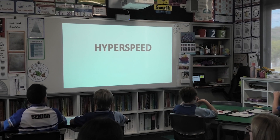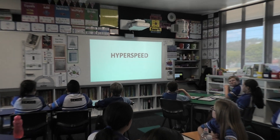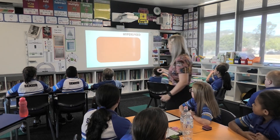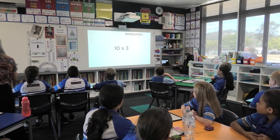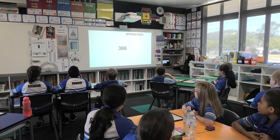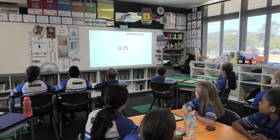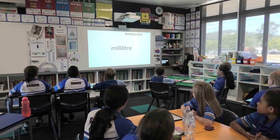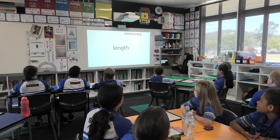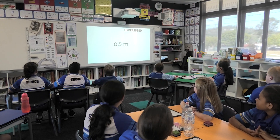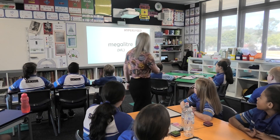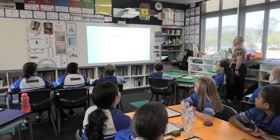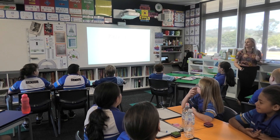Deep breath. Ready for our hyper speed. Ready? 3, 2, 1. Let's go. Yellow, blue, green, red, black, pink, purple, grey, orange, round, yellow, white, red, purple grey. 9, 2, 6, 50, 30, 8, 12, 8, 24, 388, 1099, 4, 10, 6, 7, 5, 100. Mass, perimeter, milligram. Deep breath. Well done. 560.